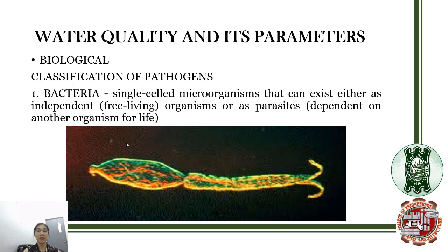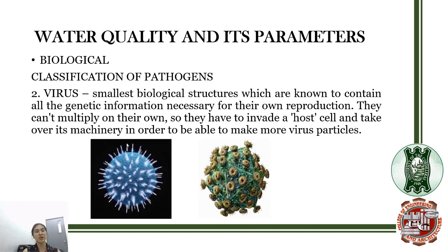Pathogens can be classified into four types. The first is bacteria — single-celled organisms that can exist either as independent or free-living organisms, or as parasites that are dependent on another organism. The second is viruses, which are the smallest biological structures known to contain all the genetic information necessary for their own reproduction. Viruses cannot multiply on their own; they must invade a host cell and take over its machinery in order to replicate.